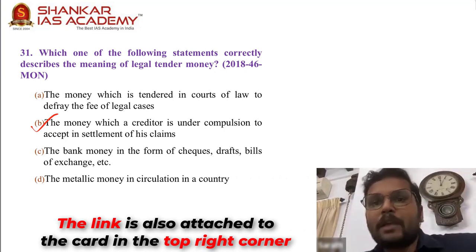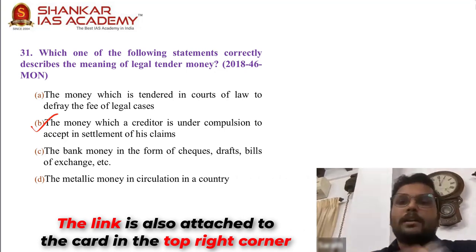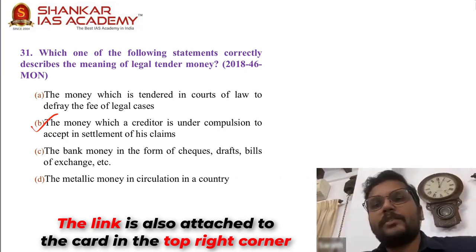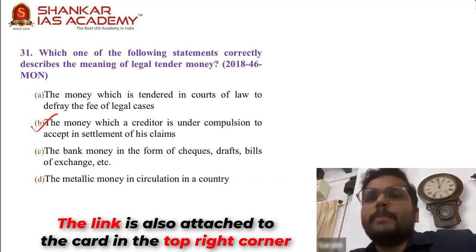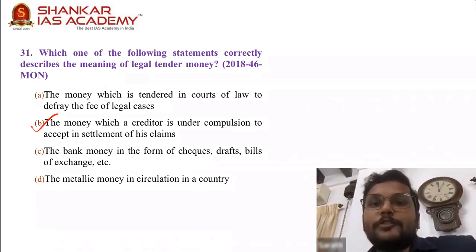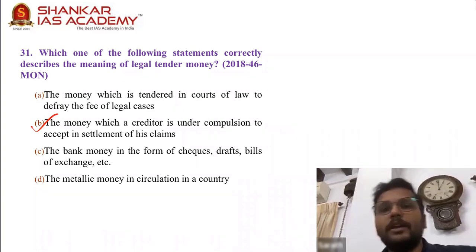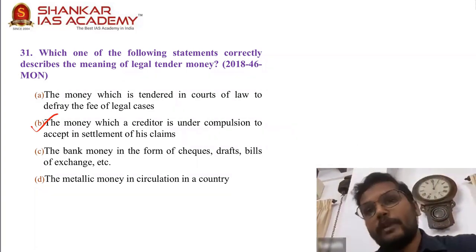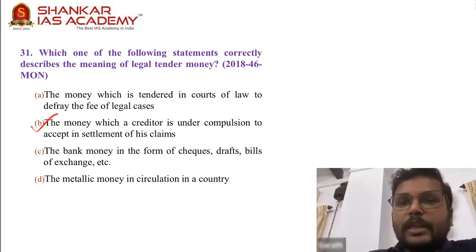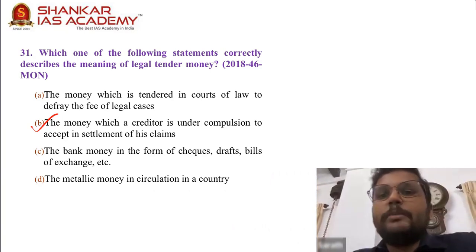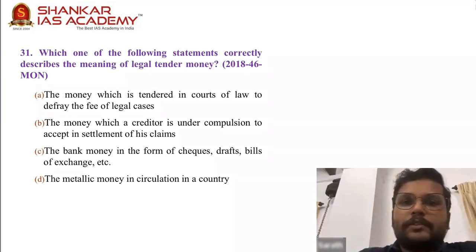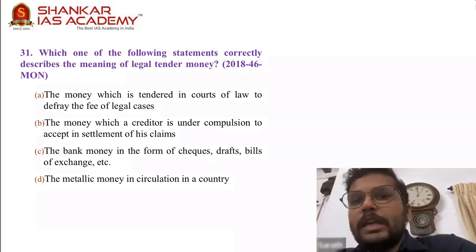The money which a creditor is under compulsion to accept in settlement of claims — that is the answer. Bank money in the form of cheques and drafts has no compulsion to accept, it is not legal tender by definition. Metallic money may be legal tender, but that is not the definition of legal tender — not only metallic money is legal tender. So D cannot be the answer. The answer is 31, B.